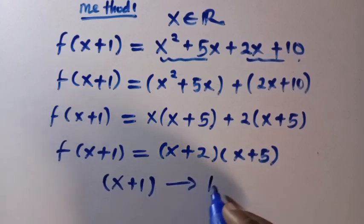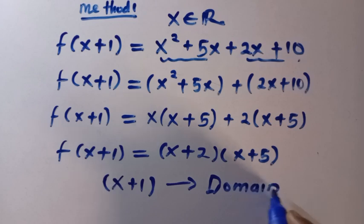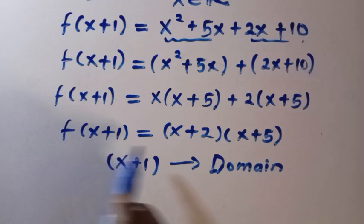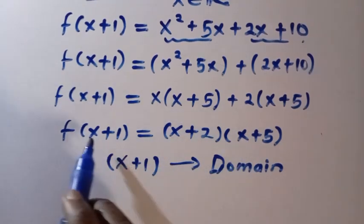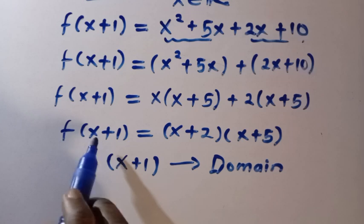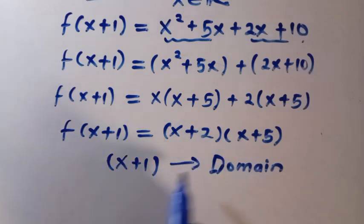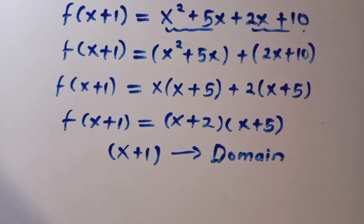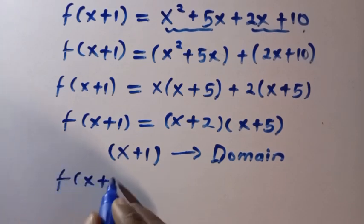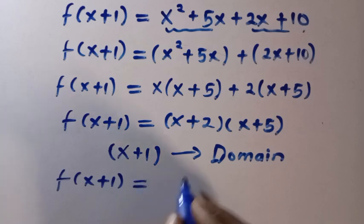So if this is our domain, then we have to make sure that x plus 2 and x plus 5, they look same thing as x plus 1. Then what we do is, we have to manipulate this. So by manipulations of x plus 2 and x plus 5, so here we mean f of x plus 1 equals, so we need x plus 1, okay?